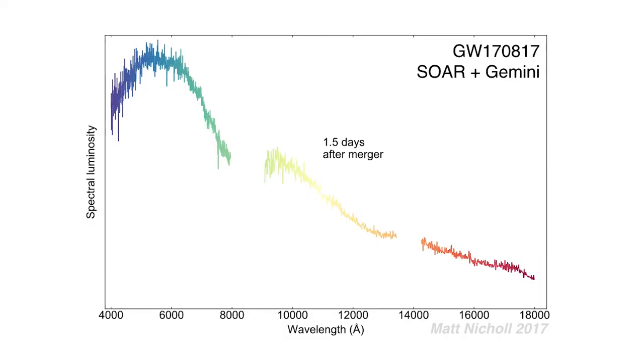The spectra that we obtained from SOAR and Magellan looked like no spectra I'd ever seen before. On the first night, it was quite blue but showed almost no spectral lines. It was very different from another source like a supernova, for example.